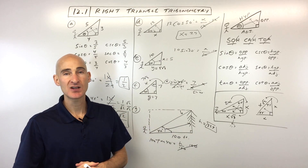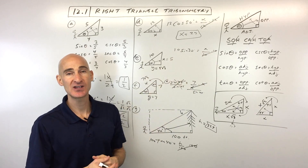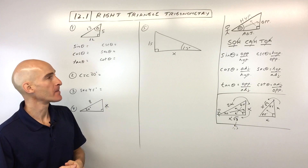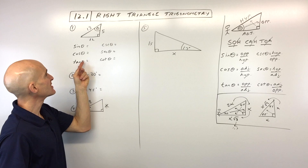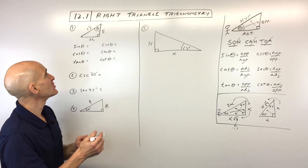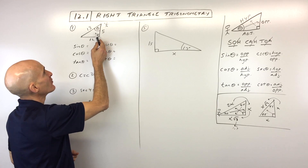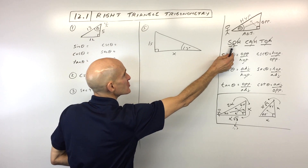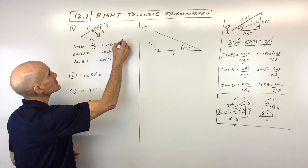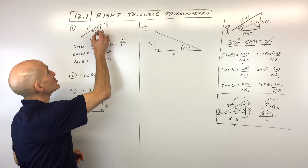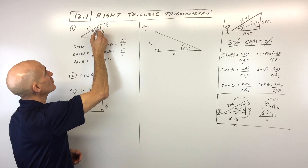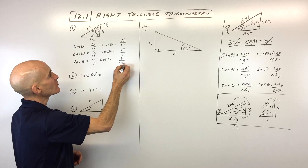Here are practice problems. For number 1, given a right triangle with sides 5, 12, and 13 and angle theta, position yourself at theta. Sine of theta is opposite over hypotenuse: 12 over 13. Cosecant is the reciprocal: 13 over 12. Cosine is adjacent over hypotenuse: 5 over 13. Secant is the reciprocal: 13 over 5. Tangent is opposite over adjacent: 12 over 5. Cotangent is the reciprocal: 5 over 12.